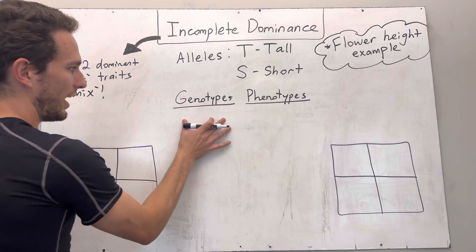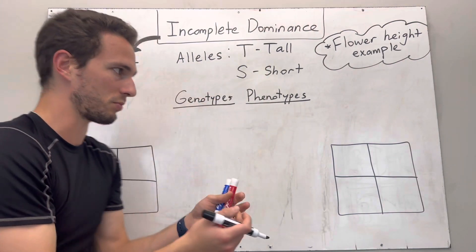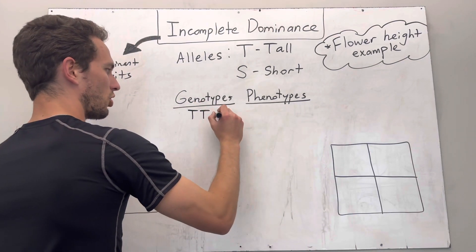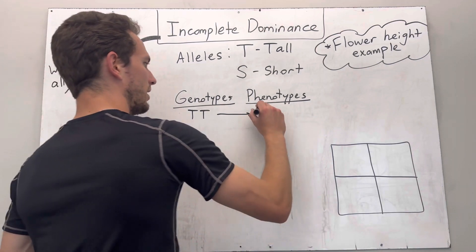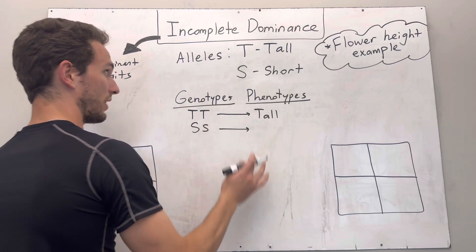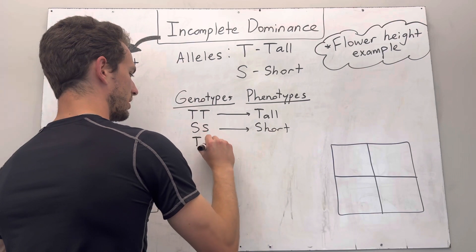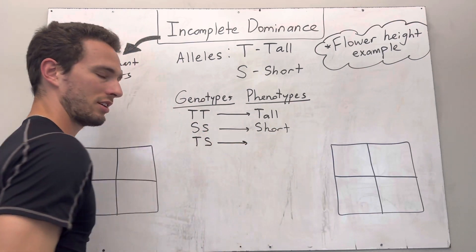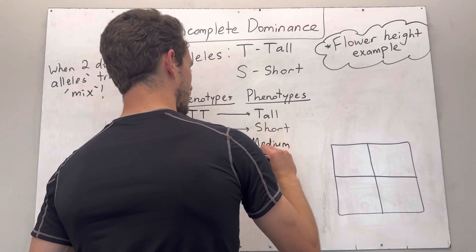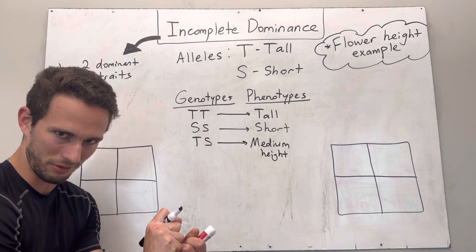When we talk about possible genotypes, we get one allele from each parent to make the offspring. We can have big T and big T — that's homozygous dominant, and that will code for a tall plant. How about big S, big S? Well, you've got two short alleles, obviously you're going to be short. But what if you have big T and big S? In that case, it's going to be medium height, because both alleles are kind of mixing together.